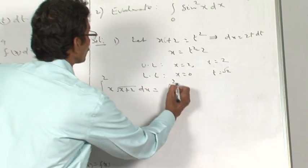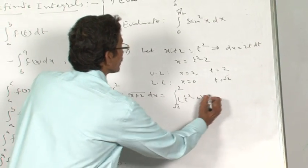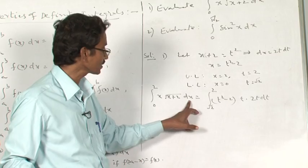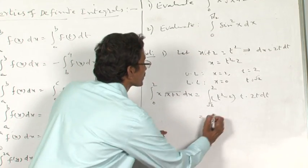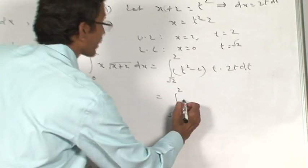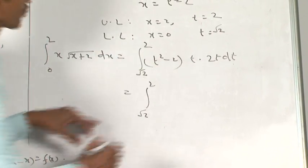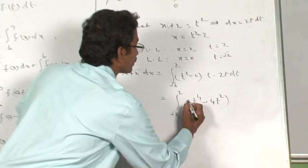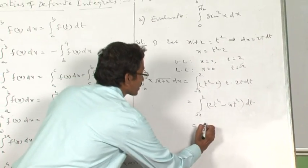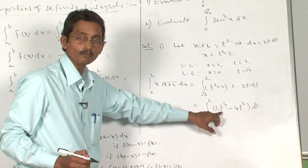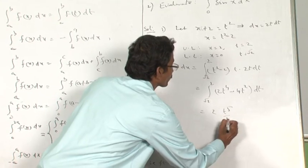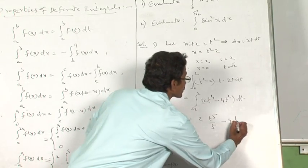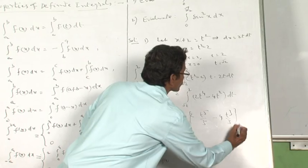This equals the integral from √2 to 2 of (t² − 2) · 2t² dt, which expands to 2t⁴ − 4t² dt. Integrating: 2 × t⁵/5 − 4 × t³/3, evaluated from √2 to 2.